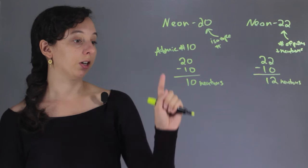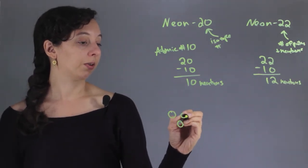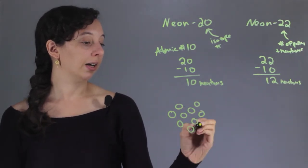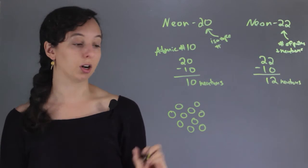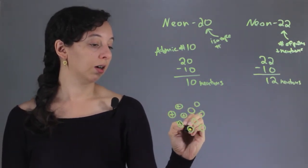So if we're going to draw the nucleus of Neon-20, it'll be 1, 2, 3, 4, 5, 6, 7, 8, 9, 10 protons. So give these guys each a positive charge.